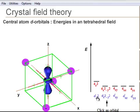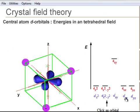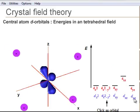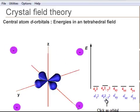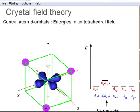In this case, the dxy, the dyz, and the dxz orbitals are raised in energy, whereas the dx-squared minus y-squared and dz-squared orbitals are lowered in energy.